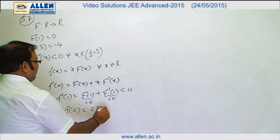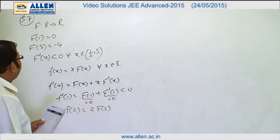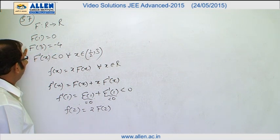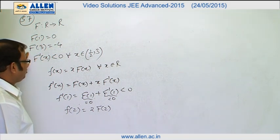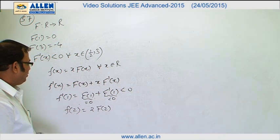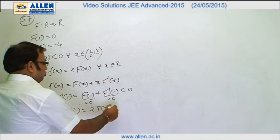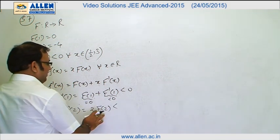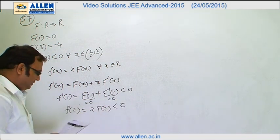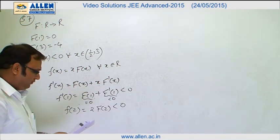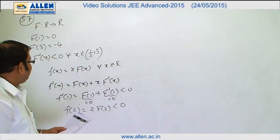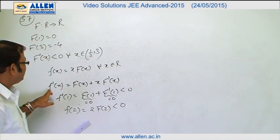Next, they ask about f(2). We have f(2) = 2 · F(2). As established, in the open interval (1, 3), F(x) is negative, so F(2) is negative. Therefore small f(2) = 2 · F(2) is also less than 0.